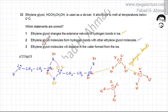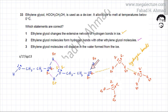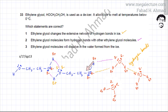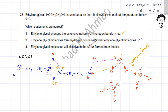The third statement is also going to be correct: ethylene glycol molecules will dissolve in water formed from the ice. If the structure of ice breaks and all the hydrogen bonds get rearranged, water molecules are attracted by the ethylene glycol molecules — the partial positive hydrogen of ethylene glycol is attracted to the lone pairs on water molecules. If two molecules attract each other strongly, they mix. So if you try to mix ethylene glycol with water, they attract each other and they stick and they mix. Since all three statements are correct, the correct option is option A.